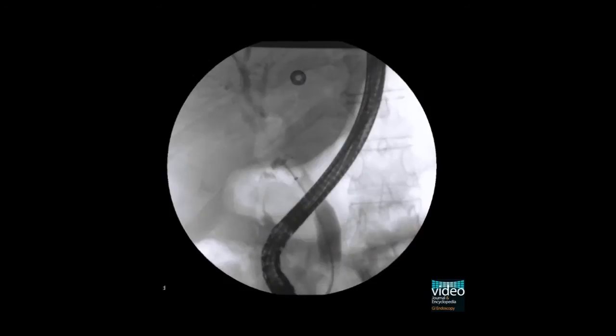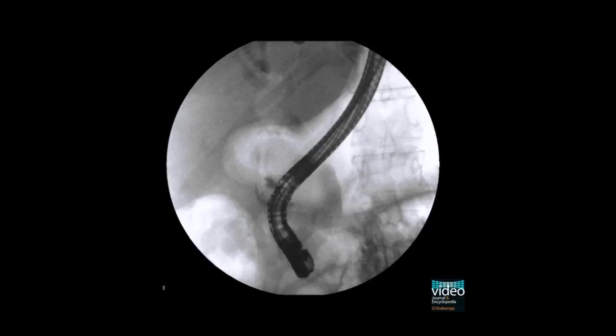Occlusion cholangiography with the inflated balloon catheter confirms complete removal of the stones. With a basket retriever the stone is grasped and retrieved. This was done on the patient's previous demand. The stone had a width of 12mm and a length of 25mm.